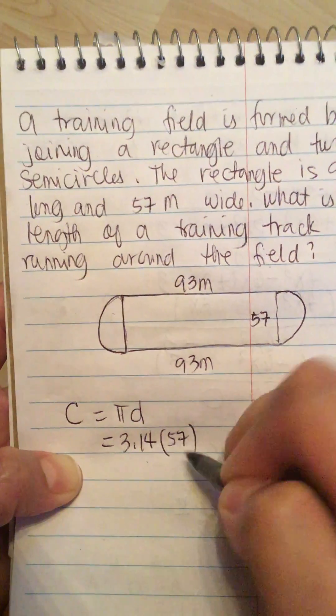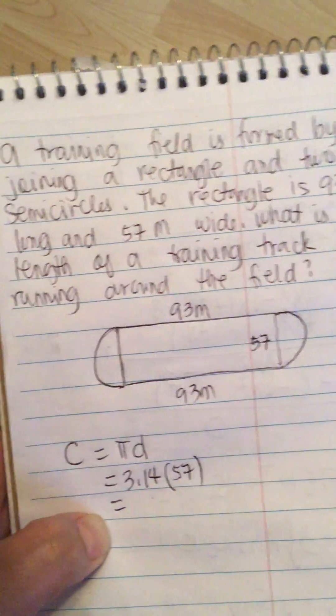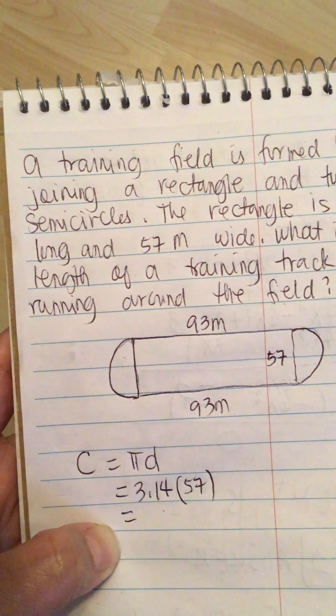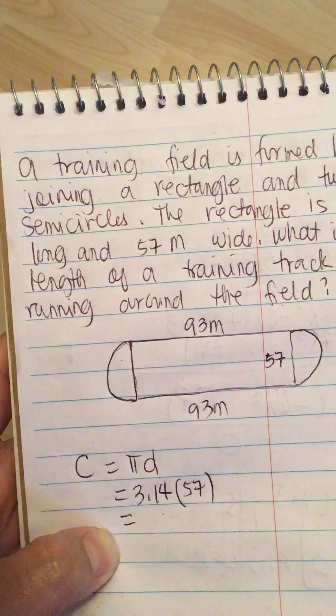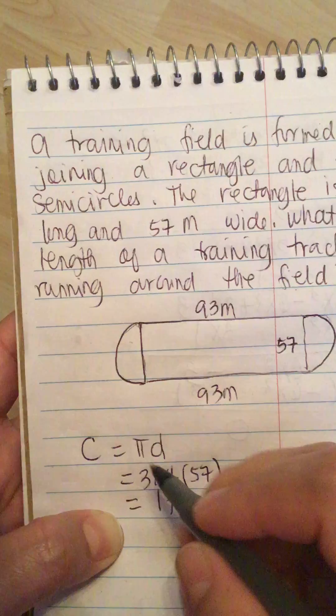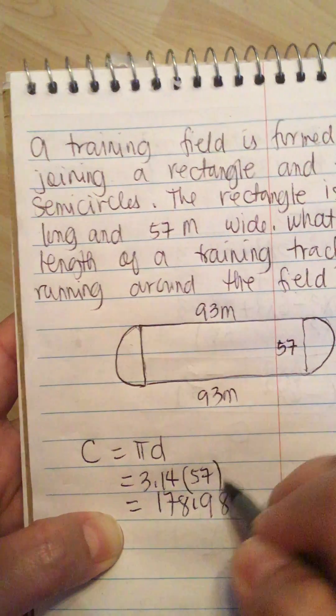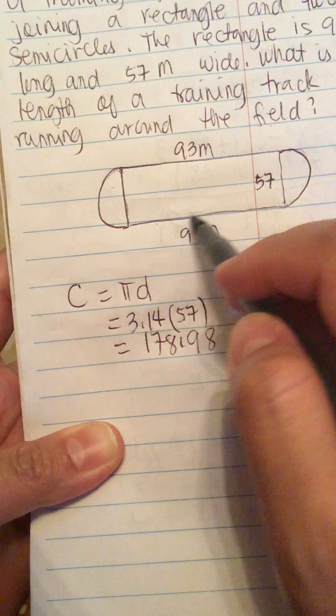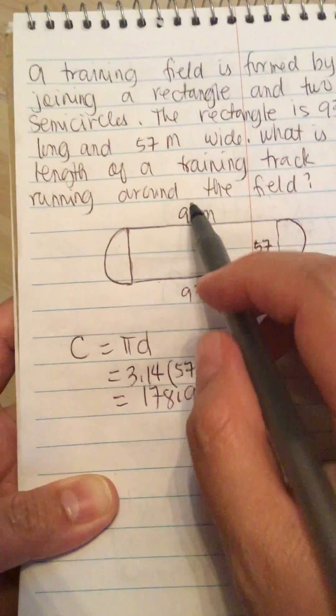So this equals 3.14 times 57, which is 178.98. So now the total length...